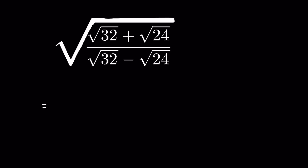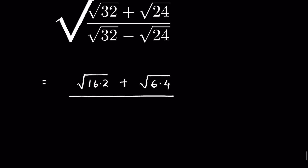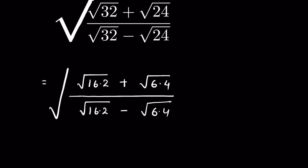Square root of 32 we can write as square root of 16 times 2, plus square root of 24 as square root of 6 times 4, upon square root of 32 as 16 times 2 minus square root of 6 times 4, all under a square root. Now when a times b is under a square root, it is equal to square root of a times square root of b.